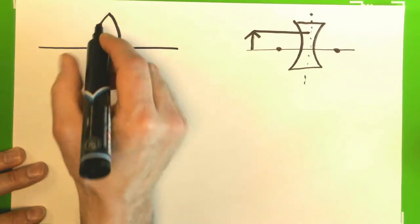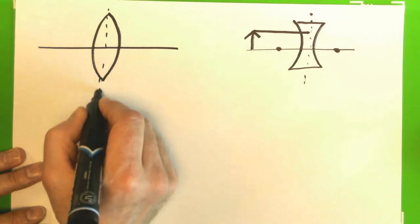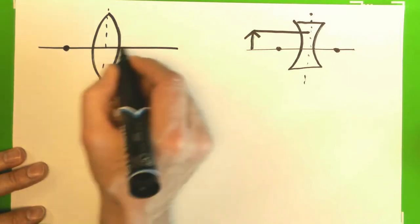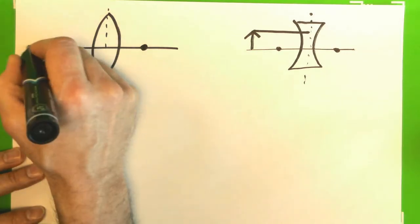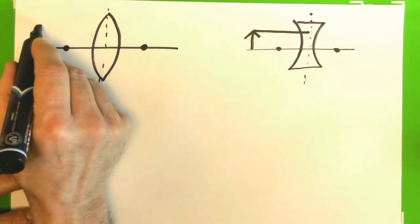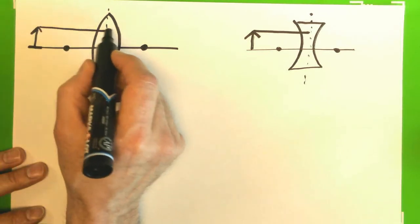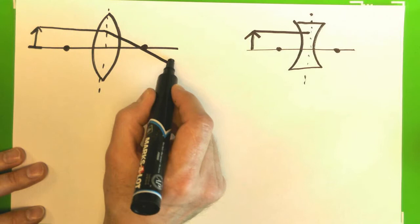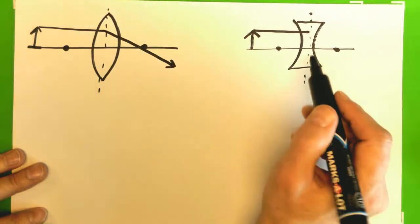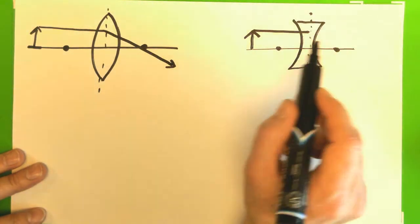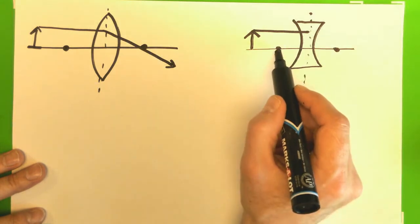So if I have this lens here, this midpoint, and I have a focal point here and a focal point here, and if my object's right here, I said the parallel ray goes through the far focal point. Well, that's not true over here. It's not the far focal point. It's actually this focal point.